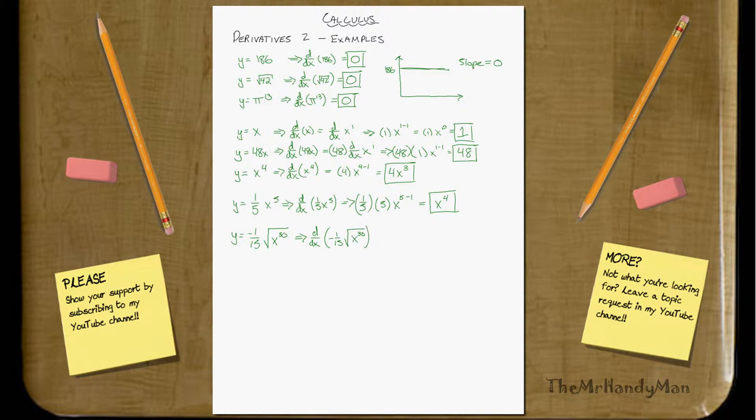Working through the algebra a little bit, that's the same thing as d dx, negative 1 fifteenth, x to the 15, which, as you do it, will be negative 1 fifteenth times 15, x to the 15 minus 1. That's the same thing as negative x to the 14th. Same thing.